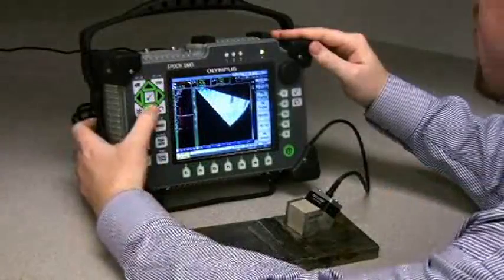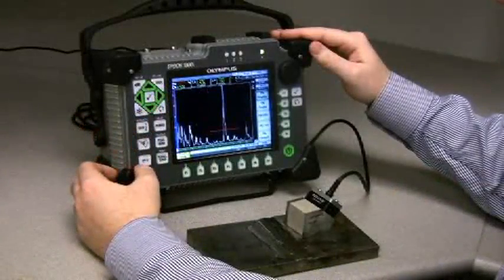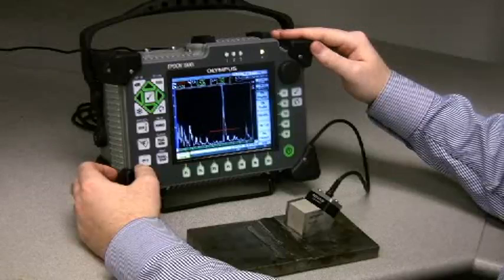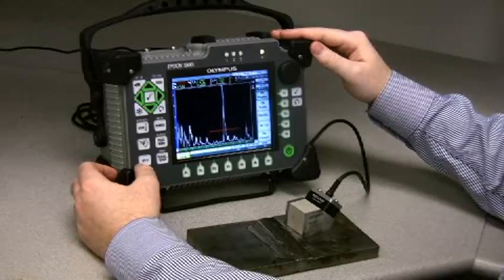Once a defect is found, it is easy for the operator to switch to a full A scan mode and continue conventional style interrogation of the flaw. This allows code compliance with AWS procedures while still utilizing the benefits of phase-array.